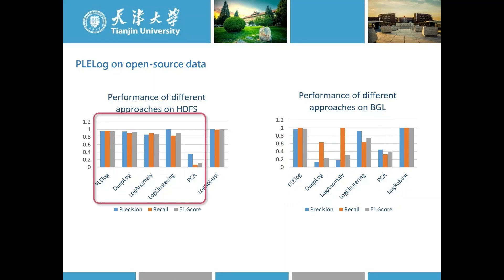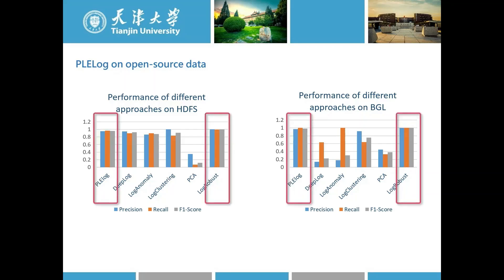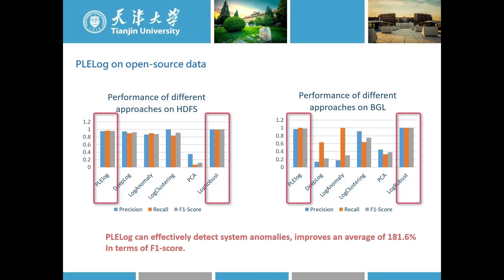Here are the results. PLE Log significantly outperforms other state-of-the-art semi-supervised or unsupervised approaches on BGL log data. On HDFS log data, the majority of existing approaches perform well. In the testing set of BGL, there are many new log events that did not appear in the training set, and other approaches cannot handle the log evolution scenario. LogRobust is slightly better than PLE Log, but it is a supervised approach requiring manual labeling, which makes it less practical. To conclude, PLE Log can effectively detect system anomalies, significantly outperforming compared approaches with an average of 181.6% improvement in terms of F1 score, while its effectiveness is close to that of the supervised approach.